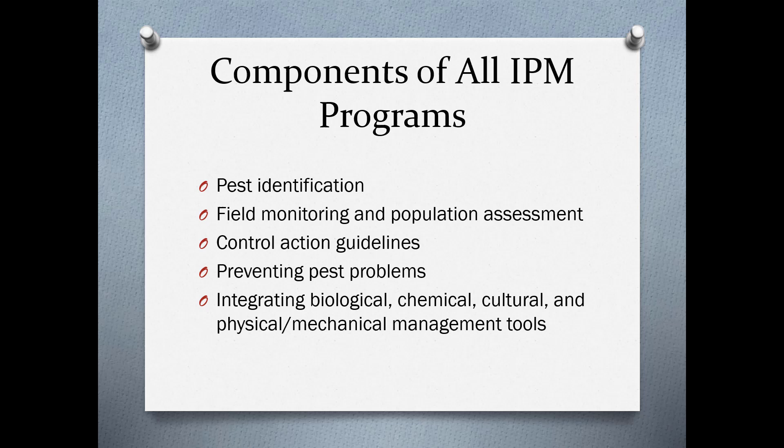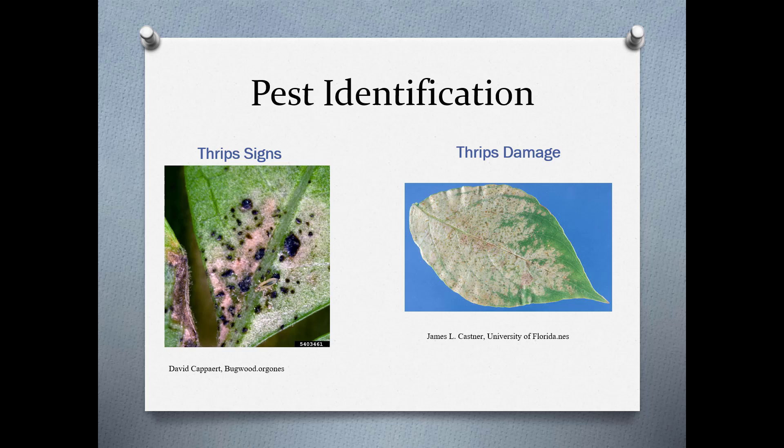The first step is identifying the plant, but if it's your nursery you should already know what plants you have. Pest identification, field monitoring, and population assessment are important. You also need control action guidelines—determining when you need to take action—and you should prevent pest problems before they happen. Then integrate biological, chemical, cultural, and mechanical management tools.